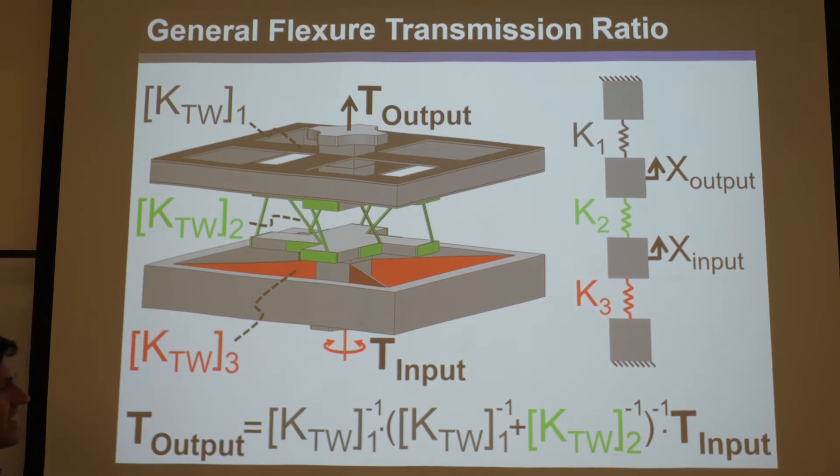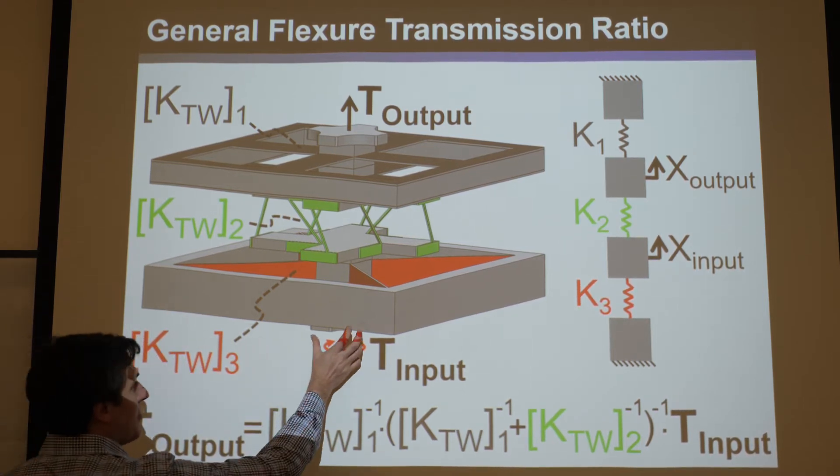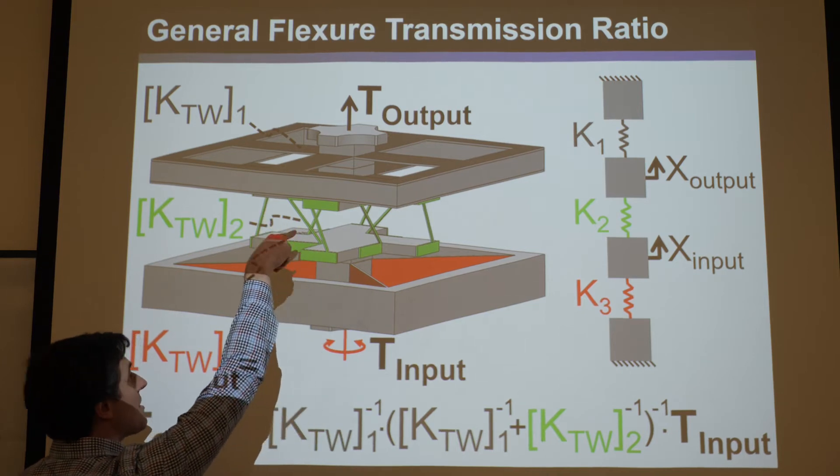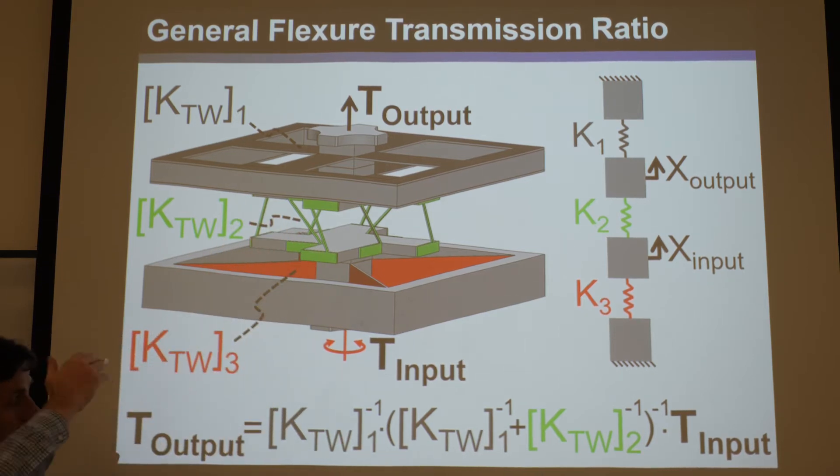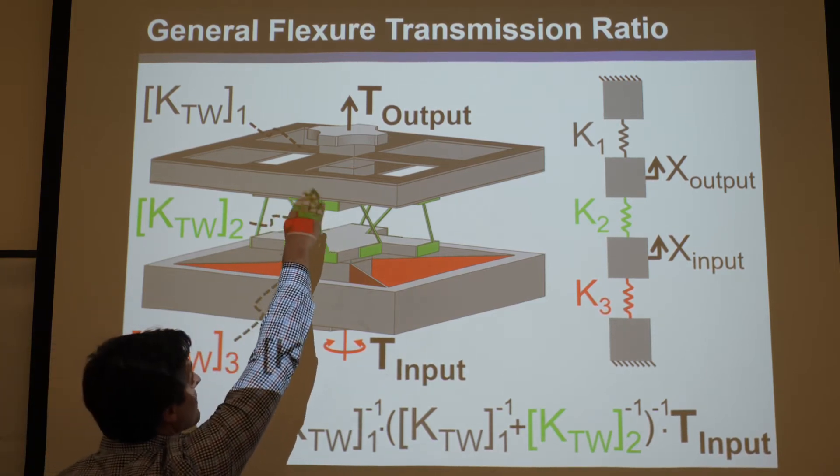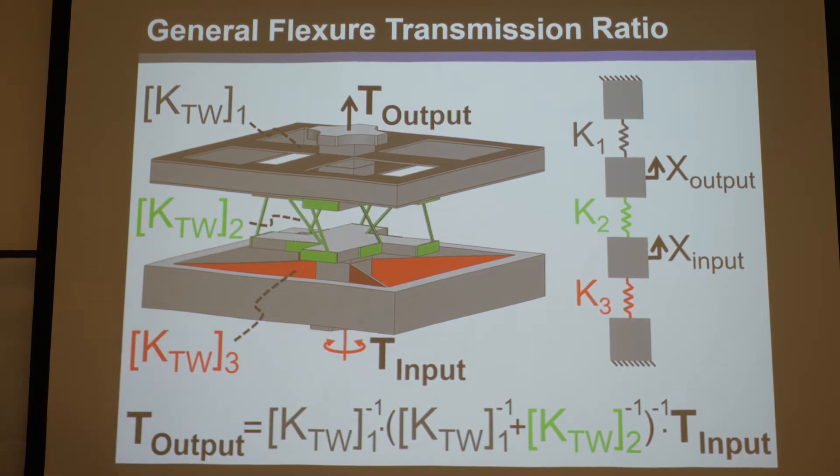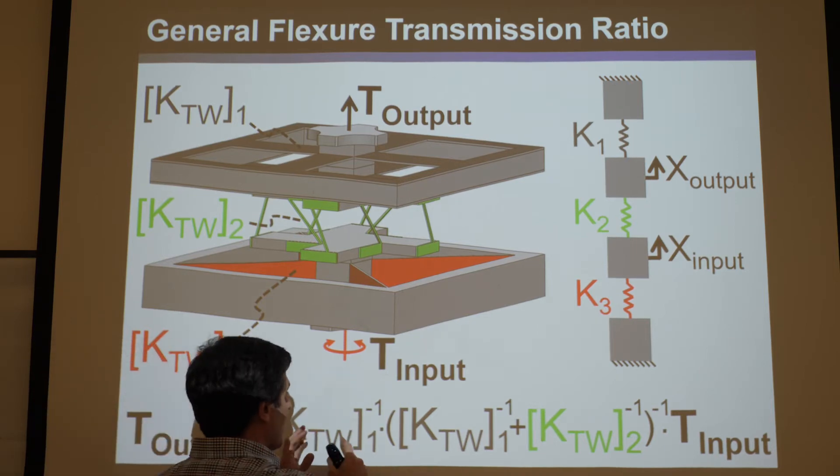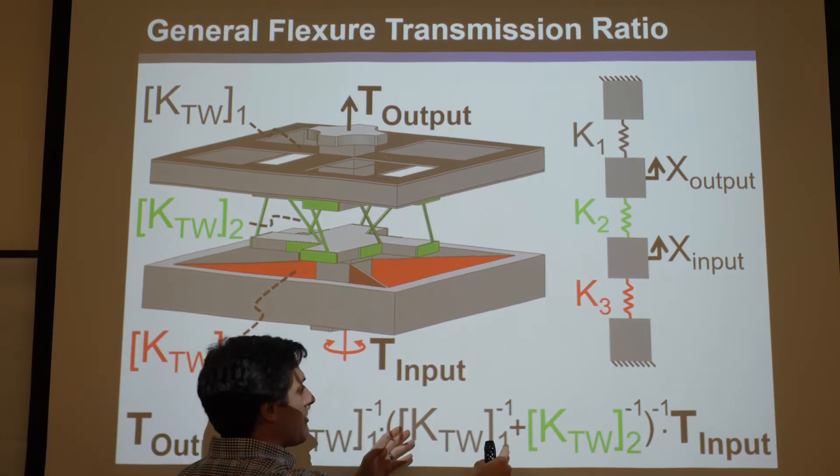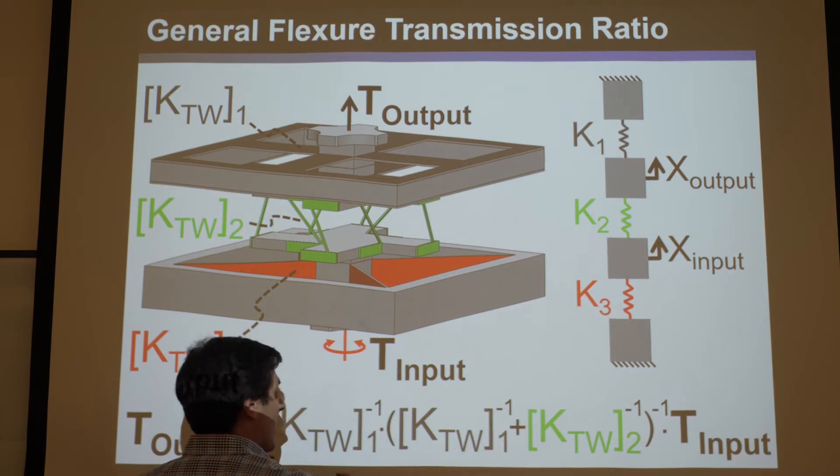You will find that if I make this the input rotation, you'll get some output transmission ratio that's close to the pitch of the screw, but not exactly. So it's a good starting place. And then you'll also find if I do the same translation, make that the input, the output will be different. It's not backdrivable. One will be KTW1, KTW1 here, and then two there.